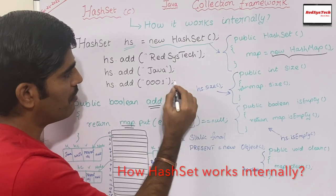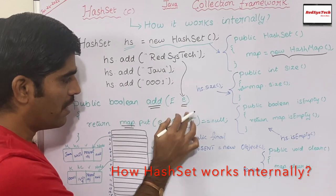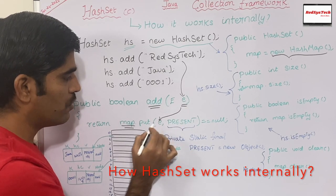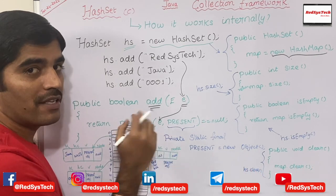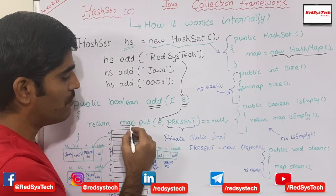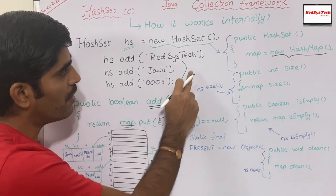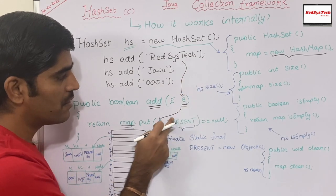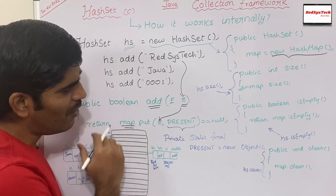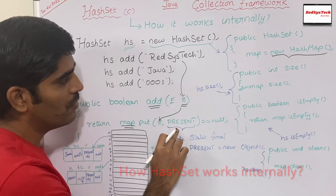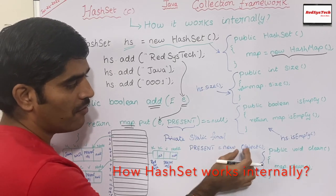This map object was created at the constructor level and the same map object is used to add these objects. So this E is nothing but whatever key we pass — that will be passed to the add method and then passed as a key to the put method. As we know, in the HashMap we have a put method to add objects. But the HashMap put method needs two things: one is key and one is value.